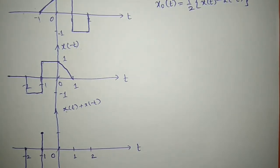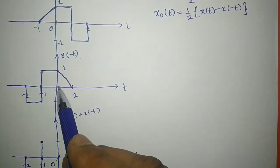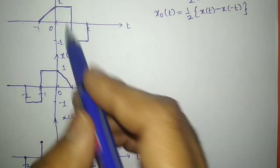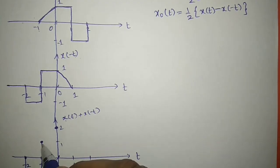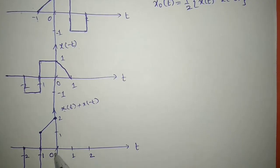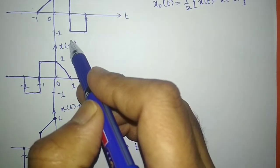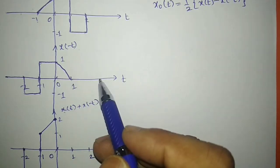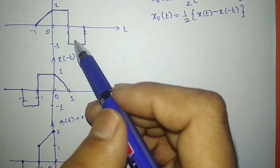At position 0, the value of x(t) is 1 and the value of x(-t) is also 1. So 1 plus 1 equals 2 — I am getting amplitude 2 at position 0. At position 1, x(-t) is taking two values: plus 1 and minus 1. But x(t) at position 1 takes only the value 0. So which value do I consider? It is simple.